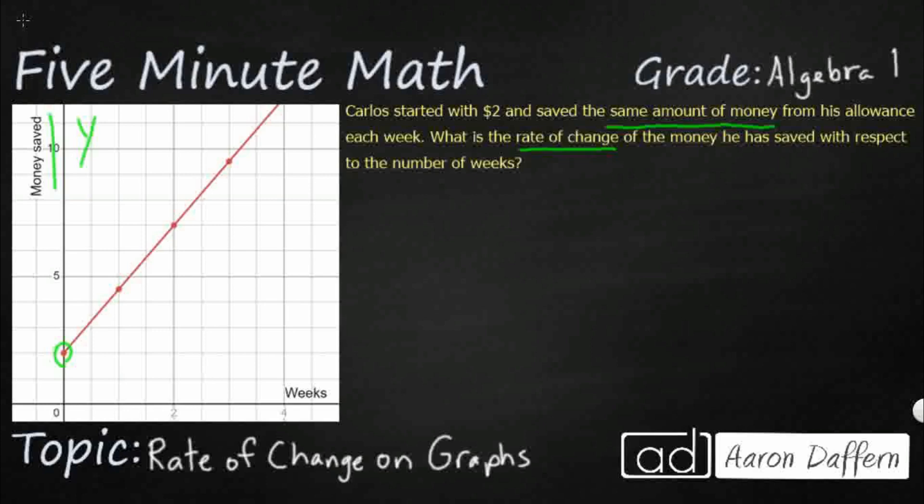And then each week he saves the same amount. And so you see it's counting by twos there, so there's my one, there's my two. I've got my three right here. But it tells us specifically what we're looking for, the rate of change of the money he has saved with respect to the number of weeks.